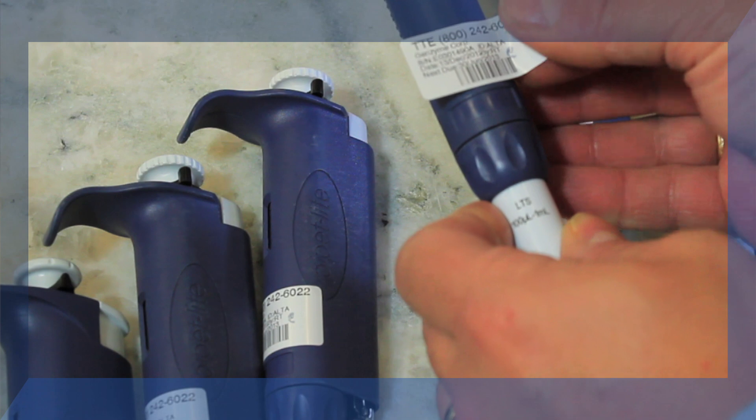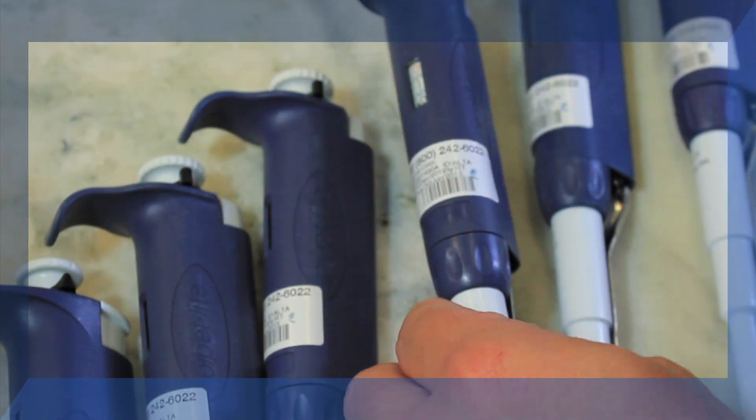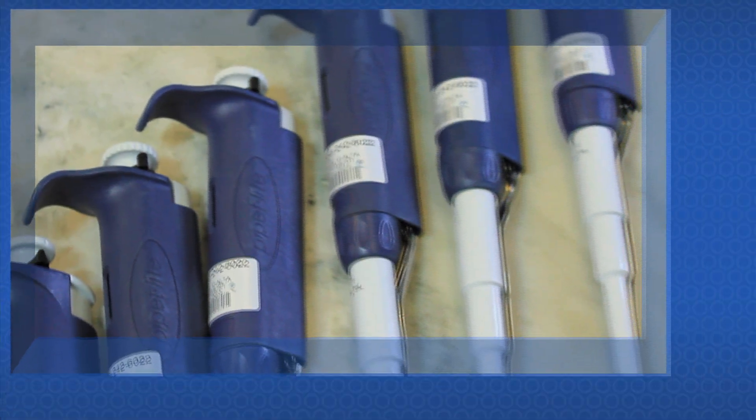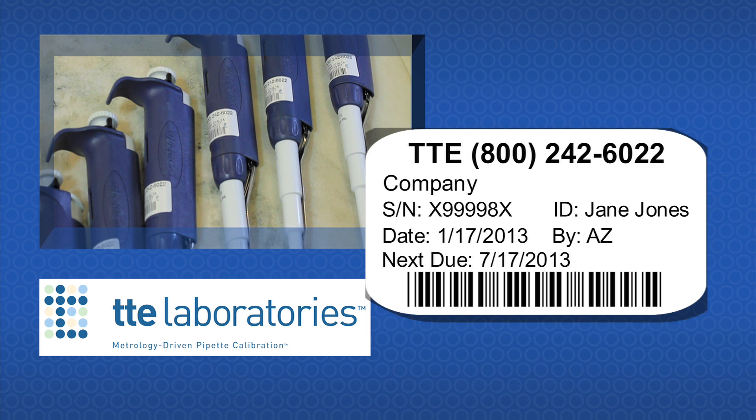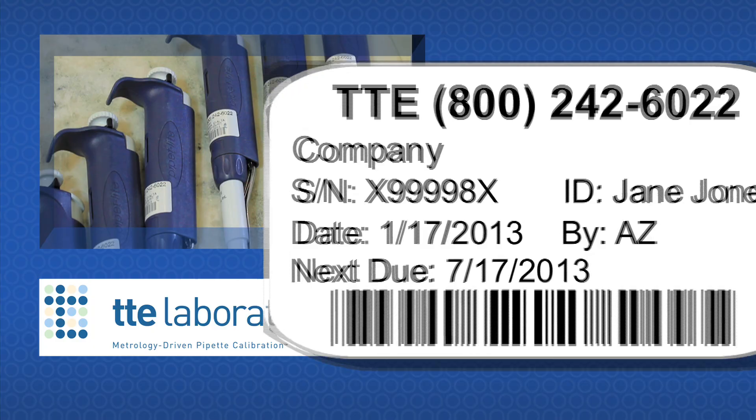As a final step of service, a new label is fixed to your pipette. At TTE, our label represents a required process of quality service. What calibration process is behind your label?